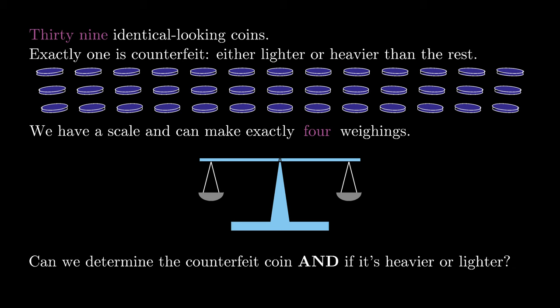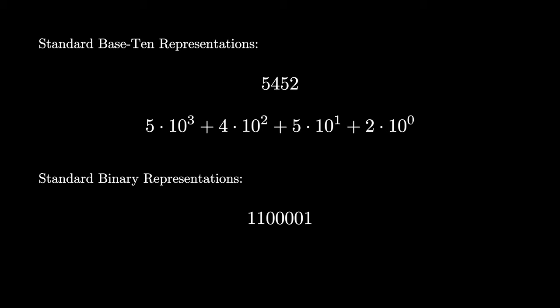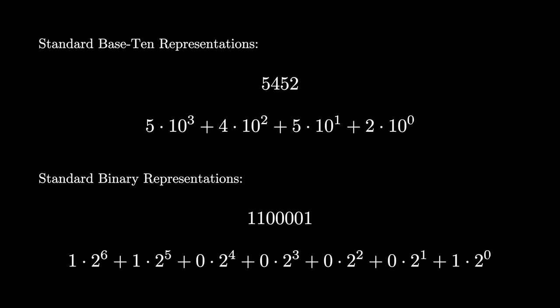To solve these types of problems, we'll introduce a numeral system called the balanced ternary system. A numeral system is a way of writing numbers. The most standard one is the base 10 representation, where a number like 5452 represents 5 times 10 to the third, plus 4 times 10 squared, plus 5 times 10 to the first, plus 2 times 10 to the zero. You might also be familiar with the binary system, where we use digits 0 and 1, and positions are given by powers of 2. So the string 1100001 represents 97.